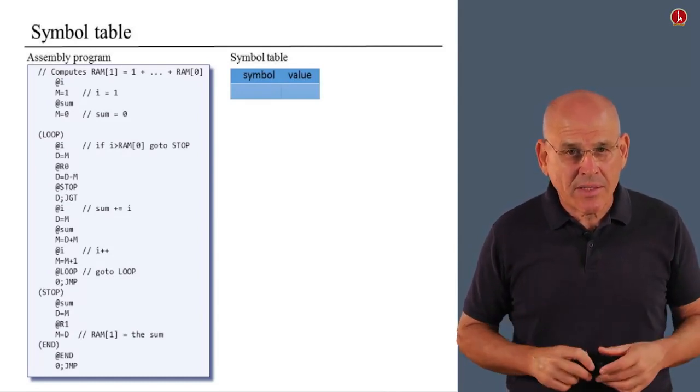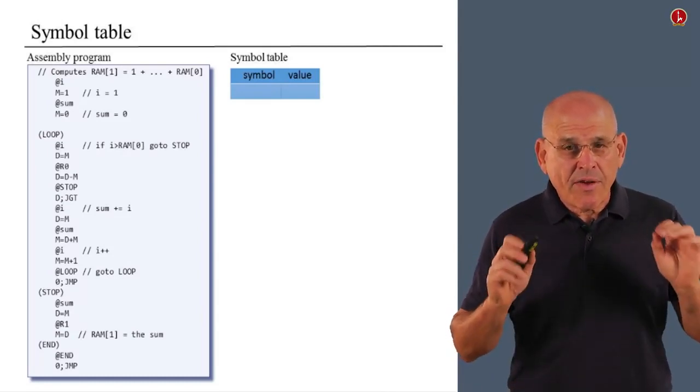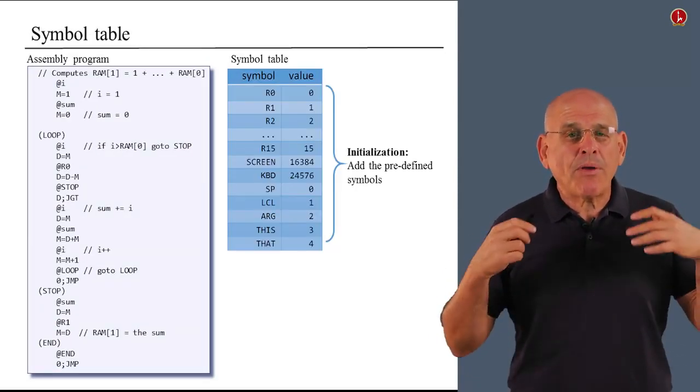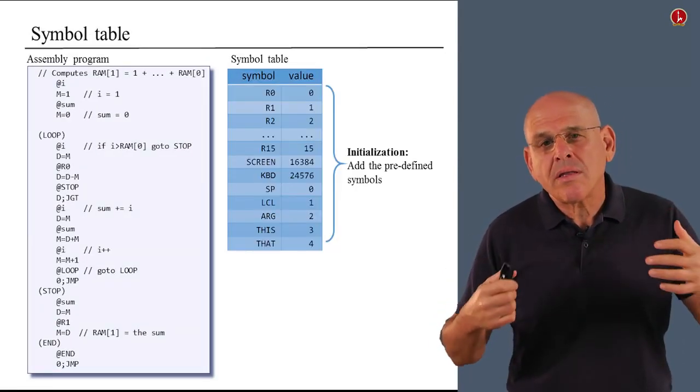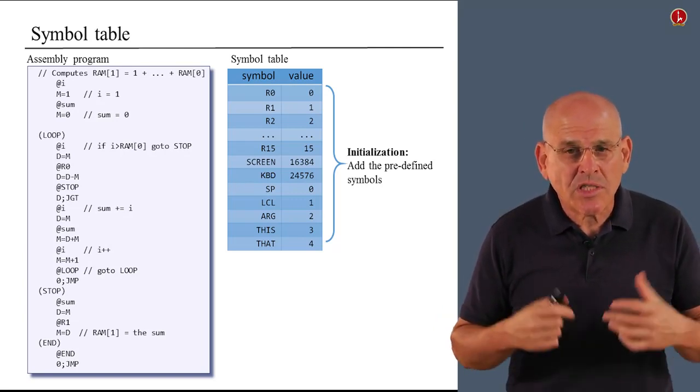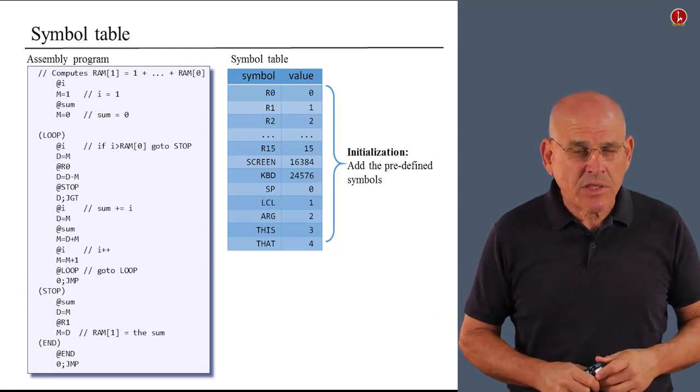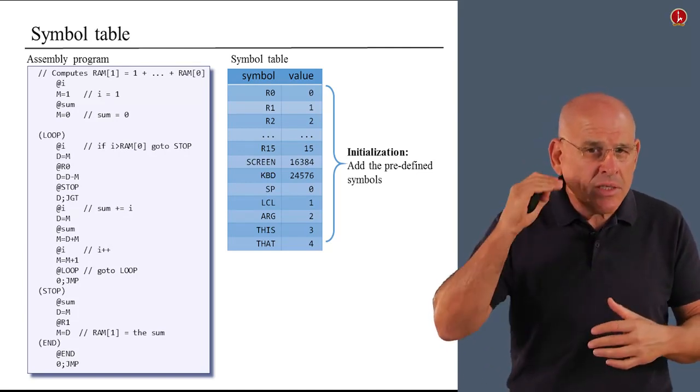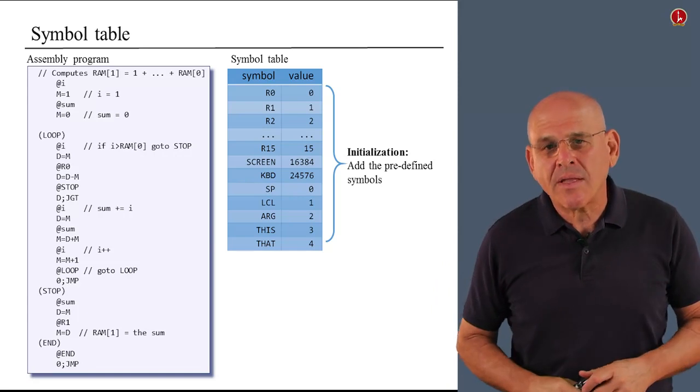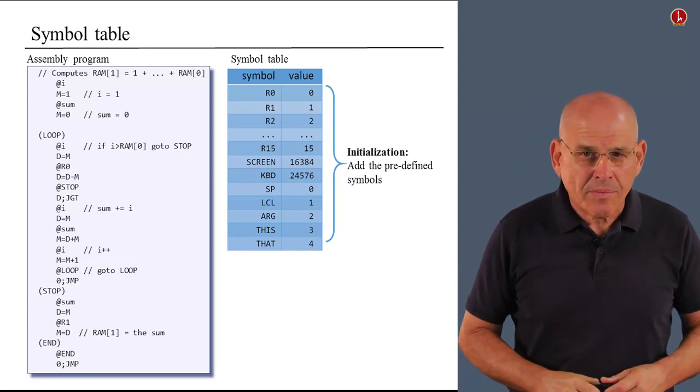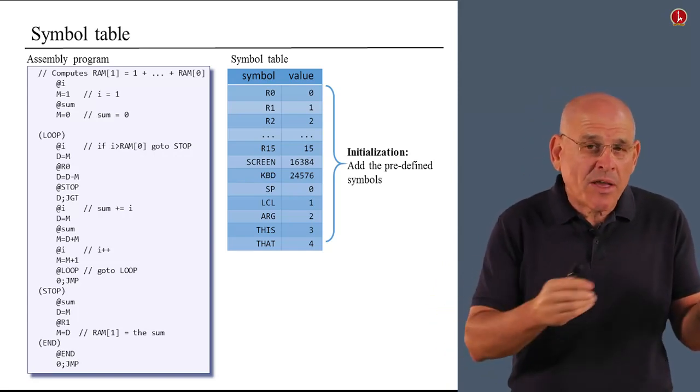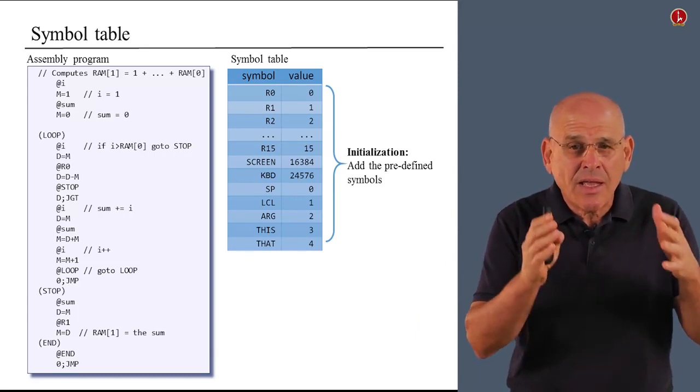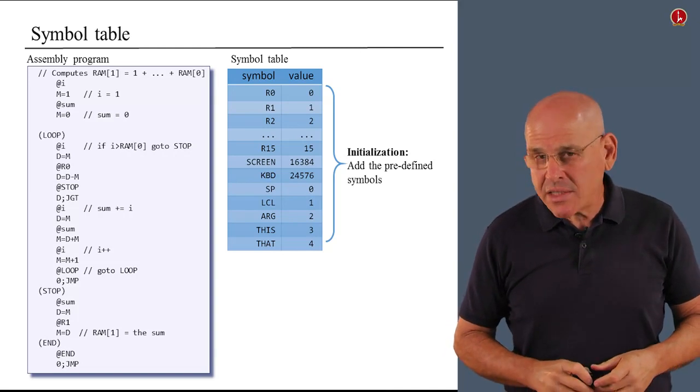So how do you create this symbol table? Well, the first thing that you do is you construct an empty symbol table. And then you populate it with all the predefined symbols which are specified in the language. So in the case of the Hack Assembly language, we have 23 such pairs. You simply add them up to the table one by one. And you do this, by the way, before you even touch the source program and before you start any translation. That's how you initialize the symbol table.